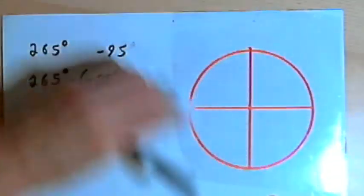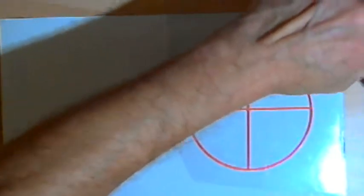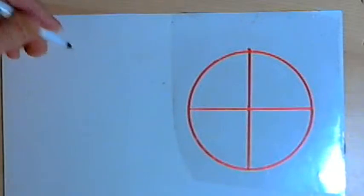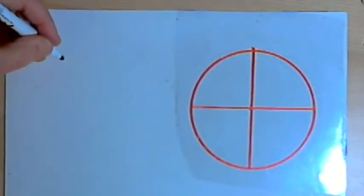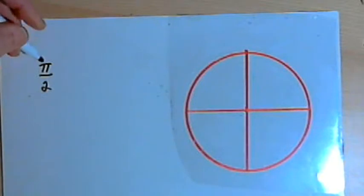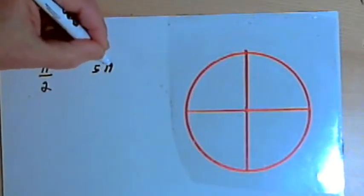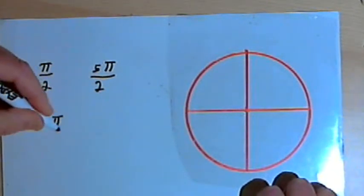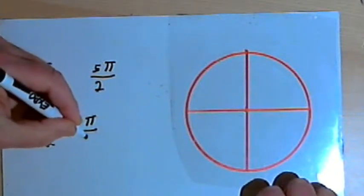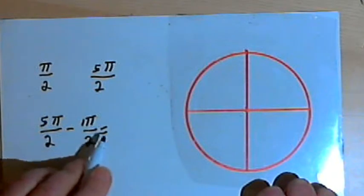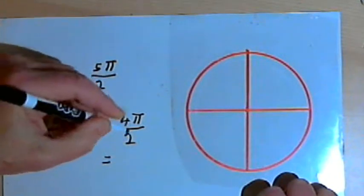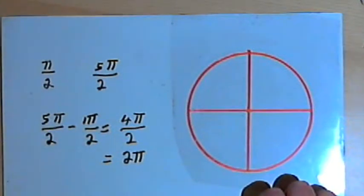Let's do one with a radian measure. Now when we deal with radians, it's going to be exactly the same thing, except instead of talking about 360 degrees and multiples of 360, we'll talk about 2 pi and multiples of 2 pi. So maybe we've got an angle that's pi over 2 and another one that's 5 pi over 2. We want to know if they're coterminal. So I'll take that 5 pi over 2, subtract pi over 2. This is like 1 pi over 2. So 5 pi minus 1 pi is 4 pi over 2, and that reduces down to 2 pi. So those two angles would also be coterminal.